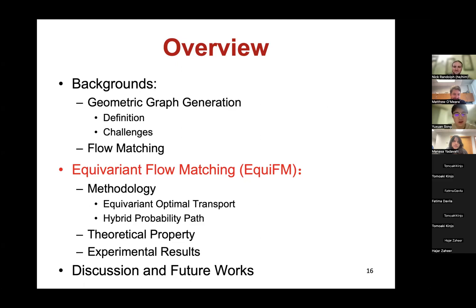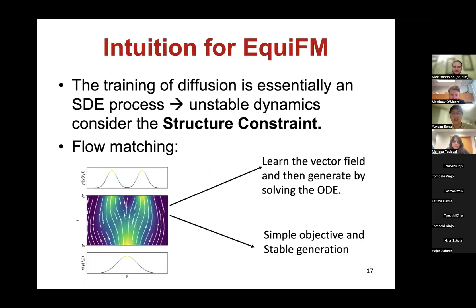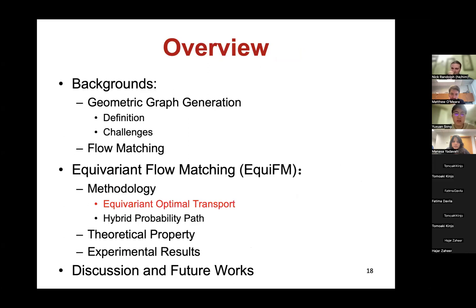Now we go to our method, equivariant flow matching. The key intuition is that we find training equivariant diffusion models is essentially an SDE process with especially unstable dynamics on the molecular space. This is not appealing considering the structure constraint. Flow matching provides an alternative way to learn the vector field and generate molecules by solving an ODE, with a simple objective and more stable generation procedure. The methodology has two key components: equivariant optimal transport and the hybrid probability path.